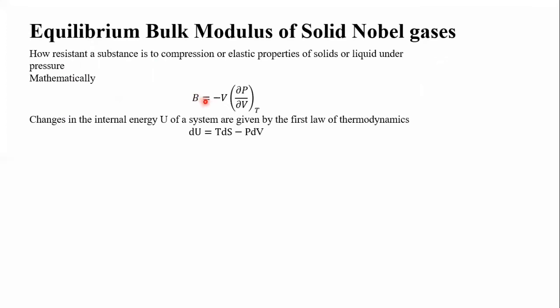Mathematically, the bulk modulus is defined as B equals minus V times the partial differential of P with respect to volume, keeping temperature constant. Pressure is related to energy, which we have learned from the Lennard-Jones potential.